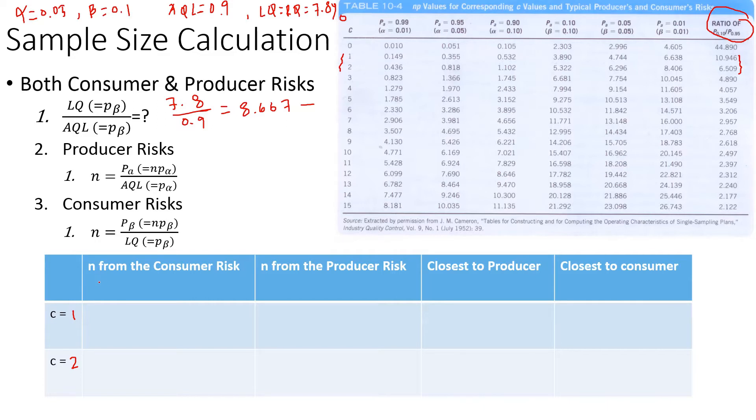To get the sample size from the consumer risk, we use the consumer risk equations. Find the C value. For consumer risk with C equal to 1, we look at the NP value, which is 3.89. Dividing by the LQ of 7.89% or 0.078, we get a sample size equal to 50.